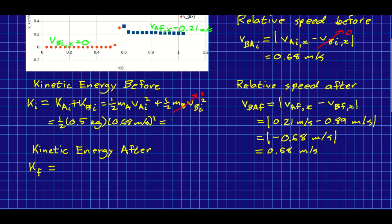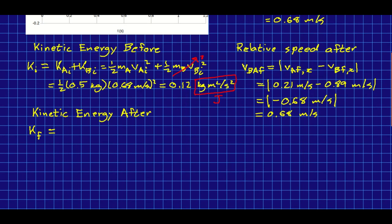If you try that out you'll find it comes out to about 0.12, and look at the units—that's kilogram meter squared per second squared. This kilogram meter squared per second squared is joules—that's the definition of joules.